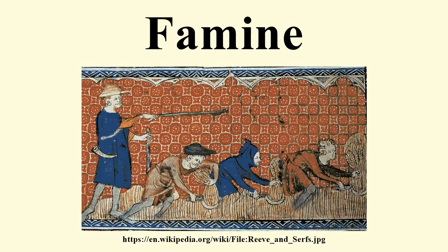Agriculture became increasingly specialized and efficient. The efficiency of Dutch agriculture allowed for much more rapid urbanization in the late 16th and early 17th centuries than anywhere else in Europe. As a result, productivity and wealth increased, allowing the Netherlands to maintain a steady food supply. By 1650, English agriculture had also become commercialized on a much wider scale. The last peacetime famine in England was in 1623–24. There were still periods of hunger, as in the Netherlands, but no more famines ever occurred.